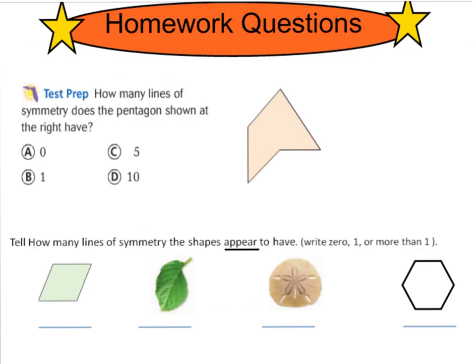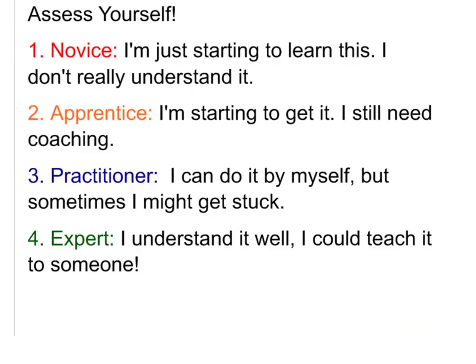Here are your homework questions for tonight. There are two examples. The first one says, How many lines of symmetry does this pentagon shown at the right have? Look at this pentagon. How many lines of symmetry does it appear to have? The bottom one has four different pictures. Tell how many lines of symmetry each shape appears to have. Write zero if it has none, one if it has only one line of symmetry, or more than one if it has more. After you finish your homework, don't forget to assess yourself in the bottom corner of your notes. Put down one, two, three, or four according to the level you feel you are at. If you are not sure about symmetry and line symmetry, you are more than welcome to go back and re-watch this video.